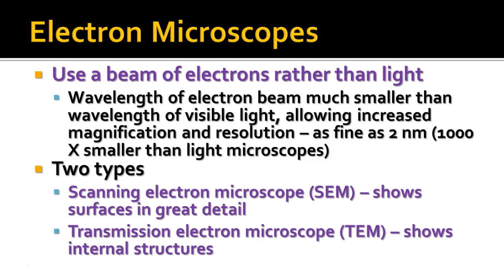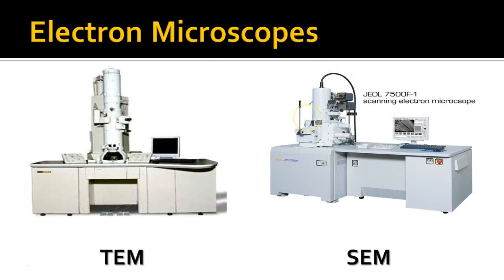There are two types of electron microscopes. There's a scanning electron microscope, also called SEM, that shows great detail of surfaces. And then there's a transmission electron microscope, or TEM, that shows internal structures. They're pretty big instruments, about the size of a desk, and they have a vacuum chamber where the air is evacuated so that the electron beam is not disrupted by dust particles or other molecules in the air.